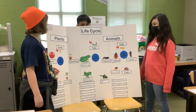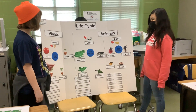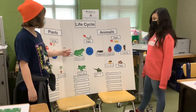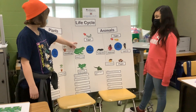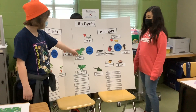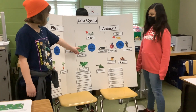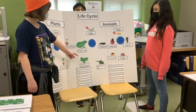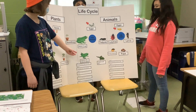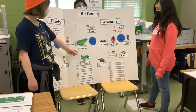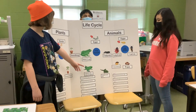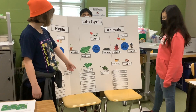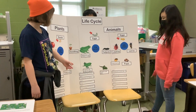In the animal life cycle — the frog life cycle — the frog lays eggs, and then the eggs when they hatch they turn into tadpoles. Then the tadpoles, when they grow a little bit more, they turn into tadpoles with gills, and also they grow legs. And then the tadpole with gills turns into a tadpole with lungs.